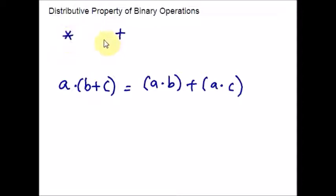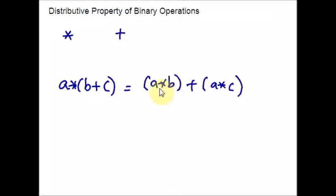Let asterisk and plus be binary operations on a set S. Then asterisk is said to be left distributive if for all A, B, C belonging to the same set S, we have that A asterisk (B plus C) equals (A asterisk B) plus (A asterisk C). Here, this is just an operation — I did not mention what operation this is. So, this is called the left distributive property.